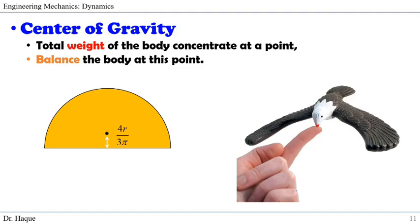Similarly, the center of gravity definition also sounds similar to the center of mass and center of pressure. It is defined as the point at which the total weight — instead of total mass — of the body is concentrated. If you know the center of gravity, you can balance the body at this point. If you remember playing with a balanced bird toy shown in the right image, if you place the center of gravity at the tip of the bird, you can balance the entire body at that point.